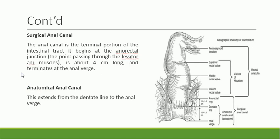The anal canal is sometimes divided into the surgical anal canal and the anatomical anal canal. The surgical anal canal begins at the anorectal junction at the level of the levator ani muscle (pelvic diaphragm) and is about four centimeters long, terminating at the anal verge. The anatomical anal canal extends from the dentate line to the anal verge.